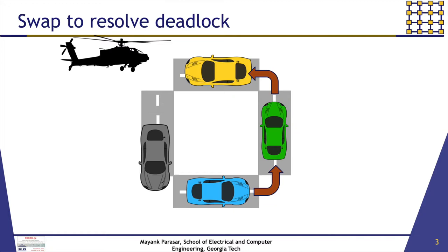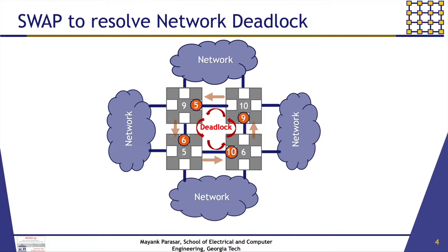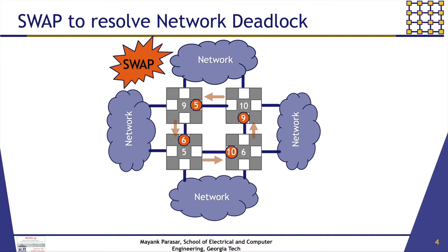Similarly, if we consider cars as packets and links as the roads in the network, then the same circular dependency results in network deadlock. The number on the packet represents the destination router a packet wants to reach. Here, each packet cannot move forward because the buffer is occupied by another packet at the next router, resulting in network deadlock. If we can swap the position of packets in the network, then we can resolve network deadlock.